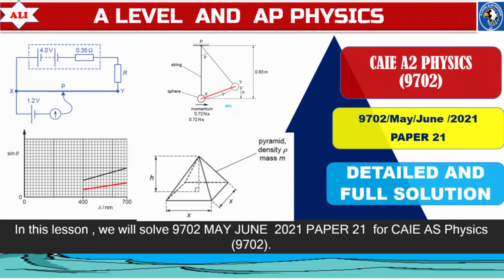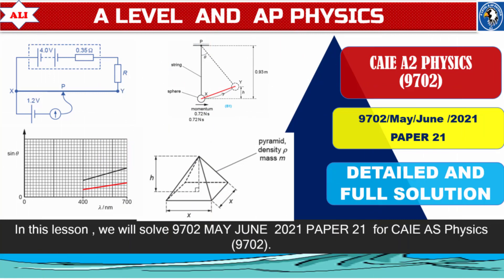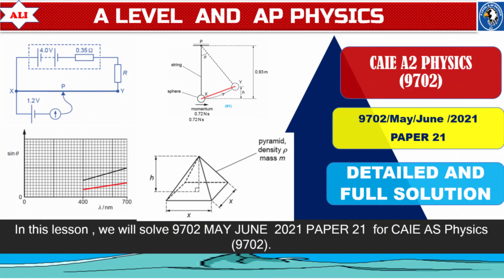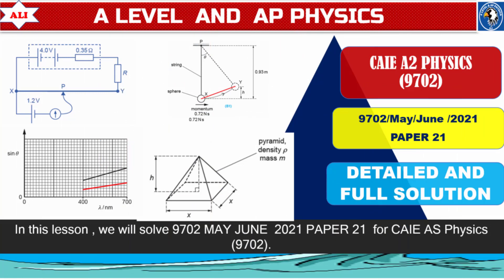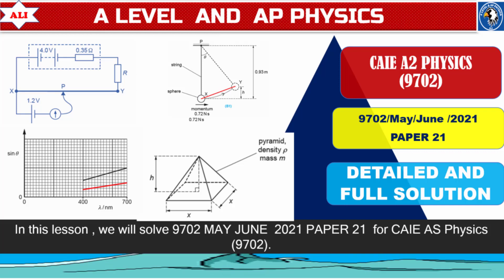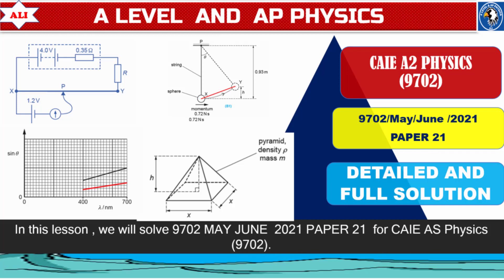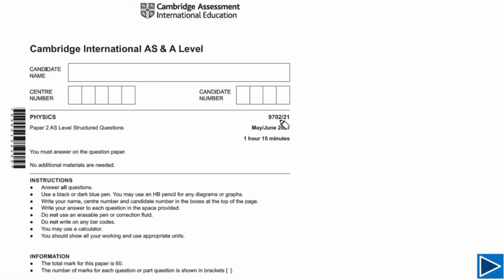Welcome to A-Level and AP Physics. In today's lesson, we will discuss May June 2021 Paper 2-1 for the Cambridge AS Physics exam. We are talking about May June 2021, and the total time for this exam is 1 hour and 15 minutes, with a total mark of 60.